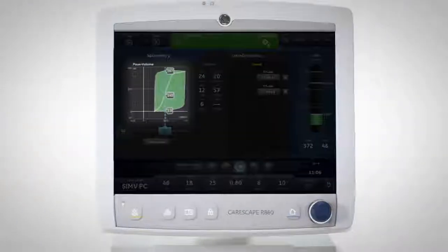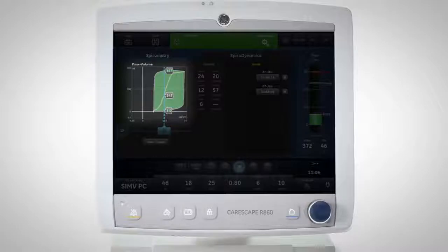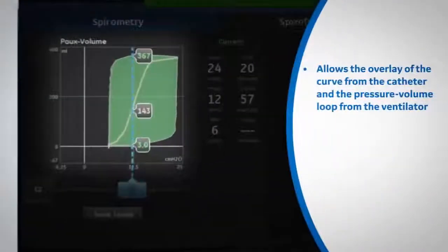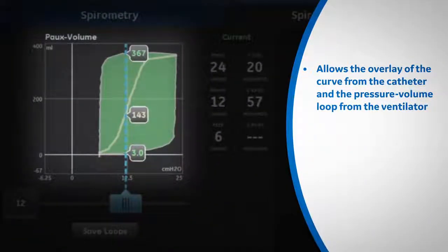The curve represented using the SpiroDynamics tool allows for easier visualization of the upper and lower inflection points. The CareScape R860 allows the overlay of the curve from the catheter and the pressure-volume loop from the ventilator.